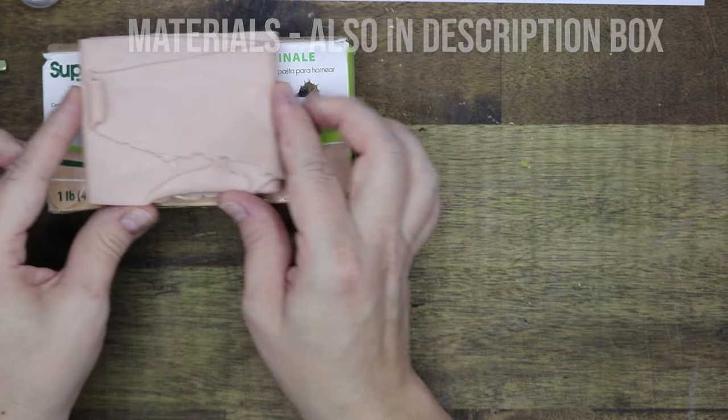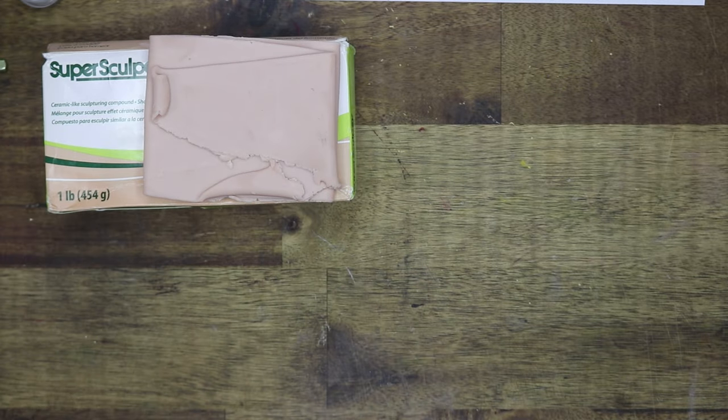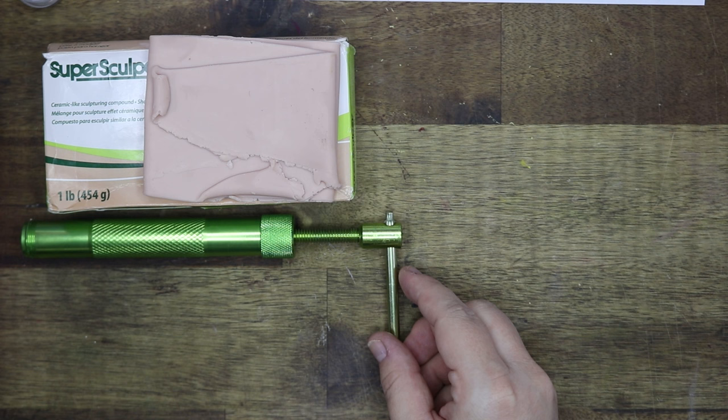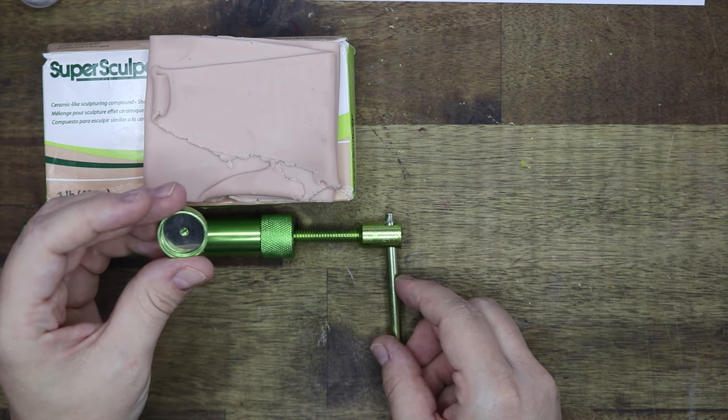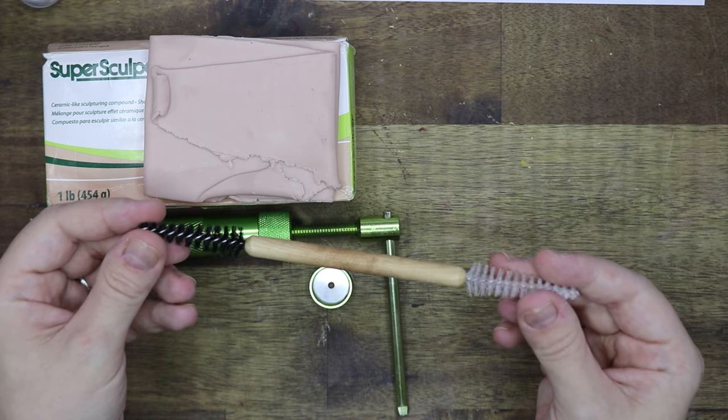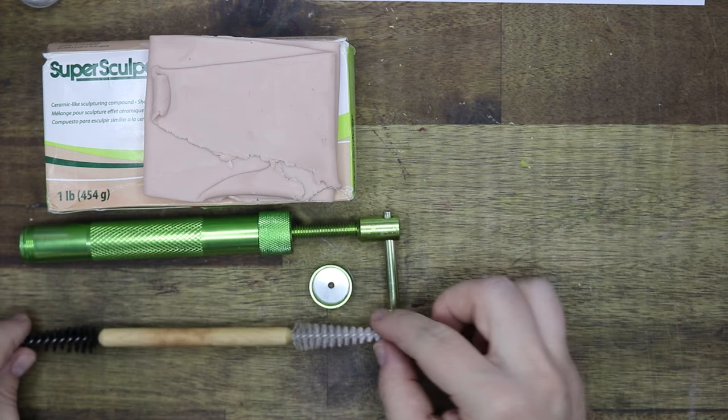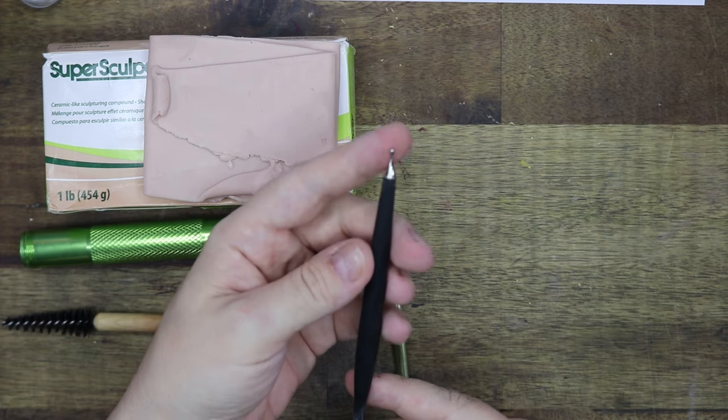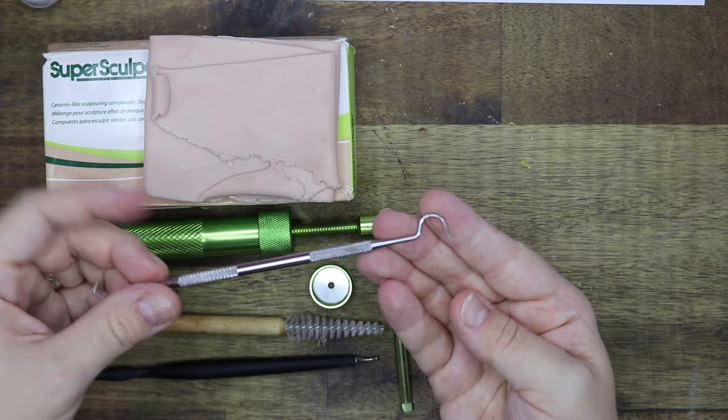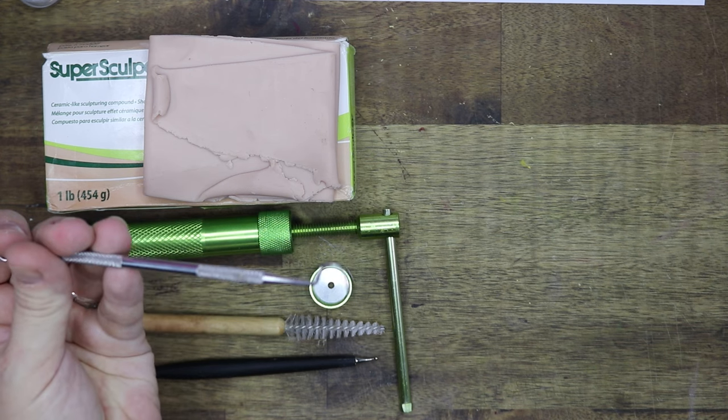We need polymer clay, I use SuperSculpey Original. A clay extruder to make easier snakes of clay, this is going to be used for the pretzels. A brush tool, an old toothbrush will work fine too. A ball tool, you can also use the end of a brush. A detailing tool, but you can also use a toothpick instead.